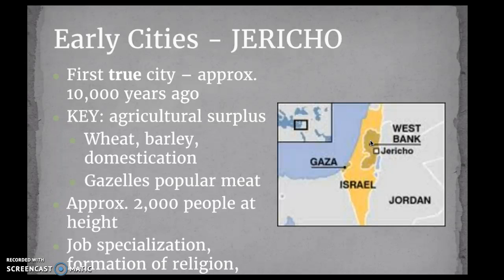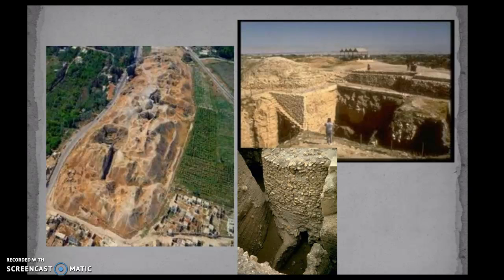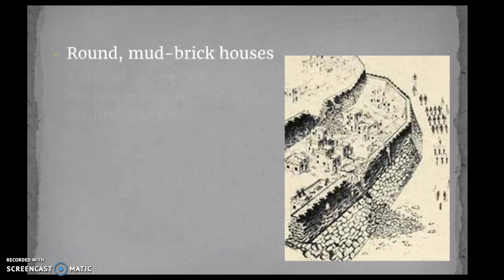Jericho had approximately 2,000 people and lots of job specialization, meaning people could focus on things beyond hunting and gathering. Because there was a food surplus, people could become artists and start making architecture and all of those kinds of things. Also there is evidence of the formation of a religion and some kind of a military-esque elite within Jericho. Looking at pictures of early Jericho, you can see that around this large city it looks like there's a very delineated, almost wall — and that's a really significant thing.